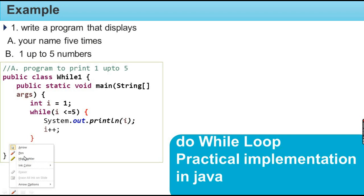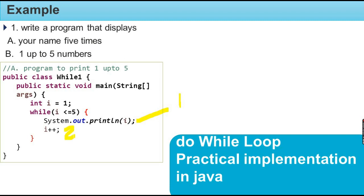Now after compiling this code, `i` is printed. Then `i` is incremented with `i++`, the band increment. Then the condition is checked again. The loop goes back and checks the condition.